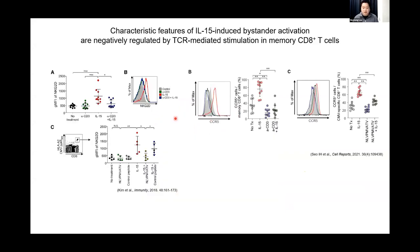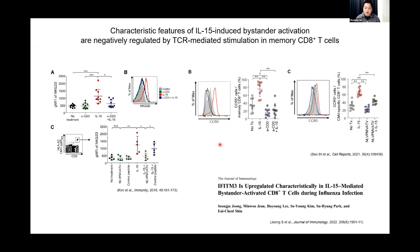In this study, we were able to find characteristic features of bystander-activated memory CD8 T-cells, such as expression of NKG2D and CCR5. We were able to see that these markers were significantly induced by IL-15 stimulation. However, in the case of concurrent TCR stimulation, this IL-15-induced expression was significantly abrogated. We also recently reported the regulation of interferon-response gene IFITM3 as a marker indicative of IL-15-induced bystander activation of memory CD8 T-cells in a mouse model of influenza infection. We were able to define this IL-15-induced bystander activation by looking at these characteristic features that are negatively regulated by TCR stimulation.